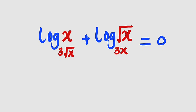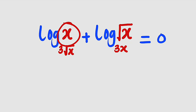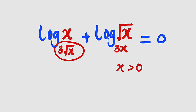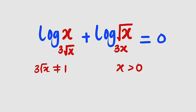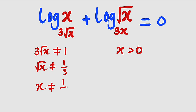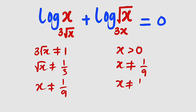Before we start, let us talk about the domain. The argument cannot be equal to 0; it has to be greater than 0. Therefore, in both cases, x must be greater than 0. Also, the base cannot equal 1. So 3√x ≠ 1 implies √x ≠ 1/3, and squaring gives x ≠ 1/9. And 3x ≠ 1 implies x ≠ 1/3. These are the three restrictions.